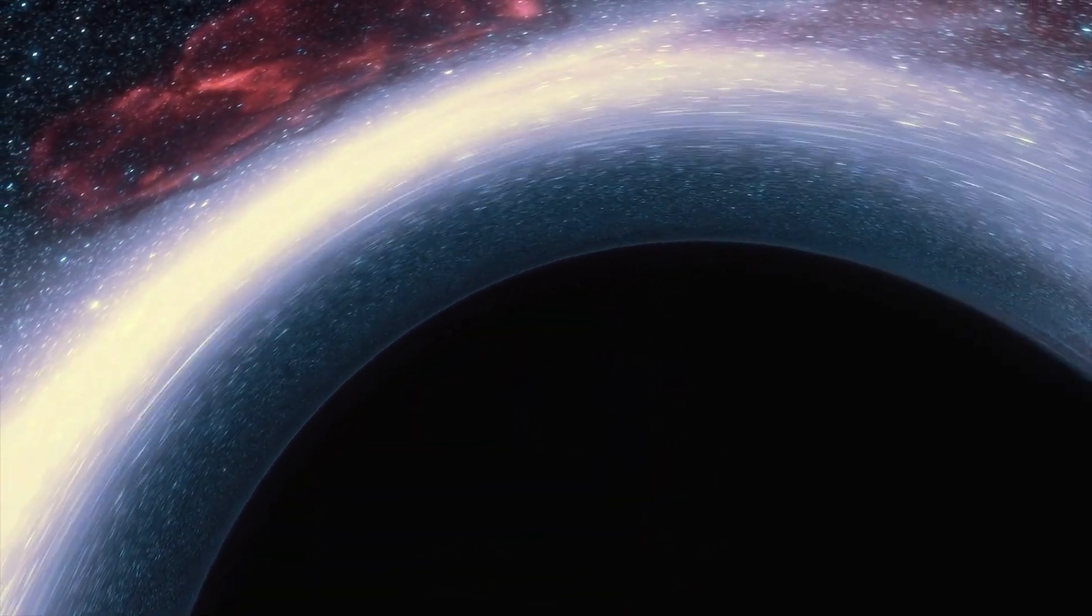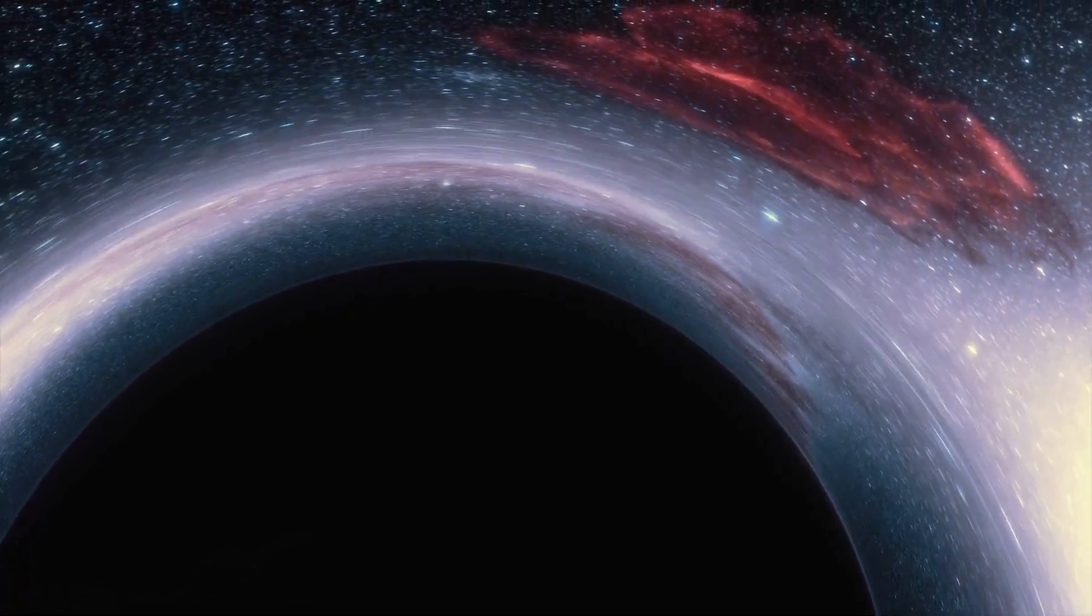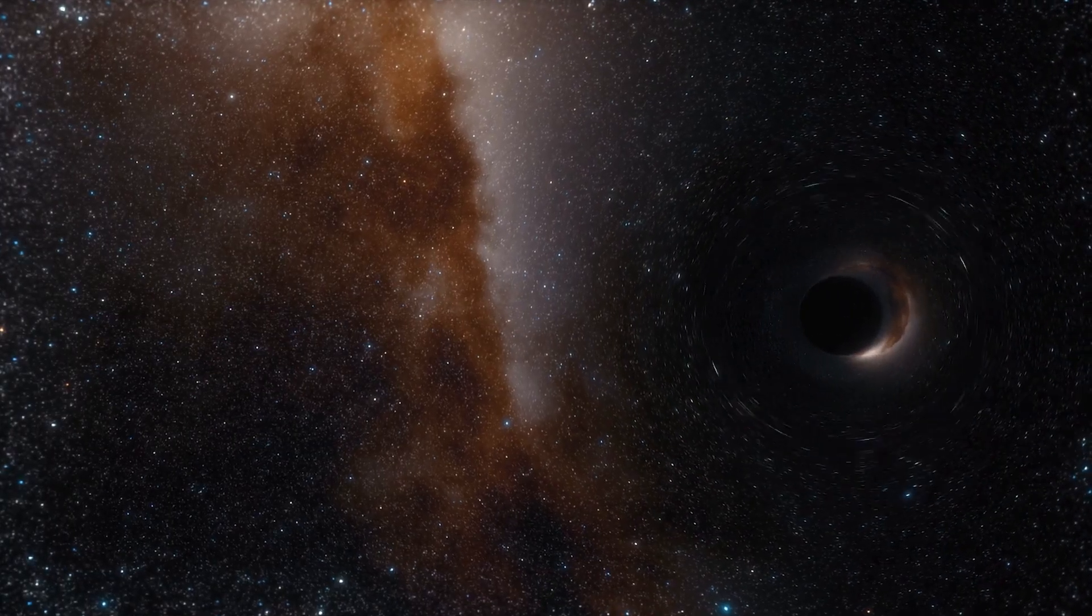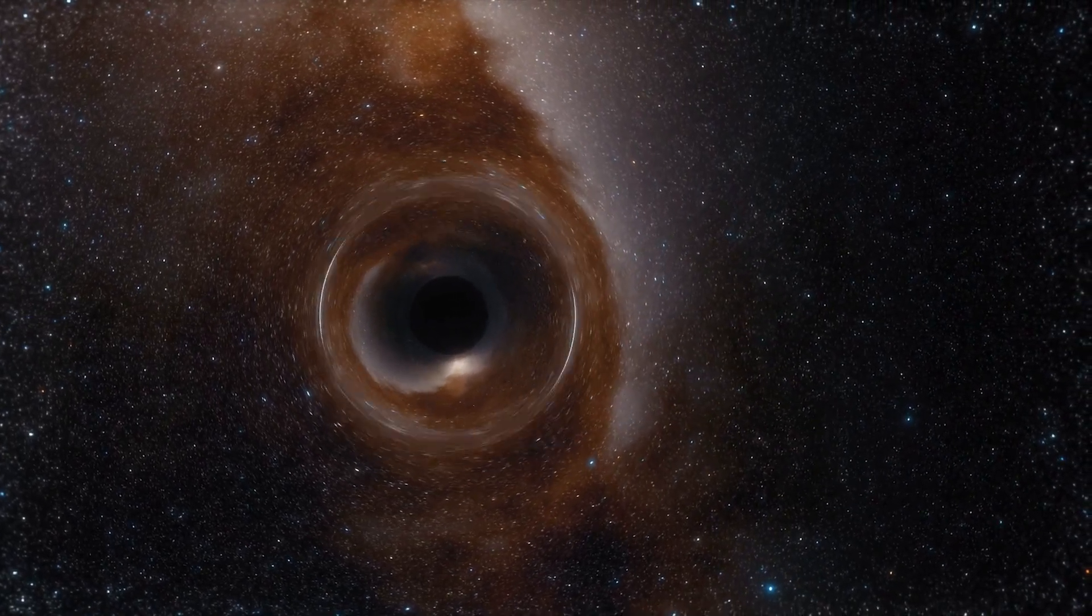If information is lost in a black hole, it violates a fundamental principle of quantum mechanics. But if information is preserved, how is it encoded in the faint Hawking radiation?